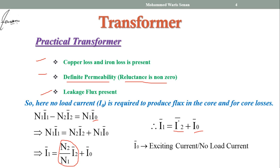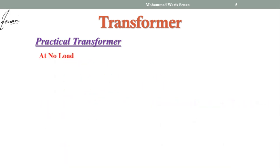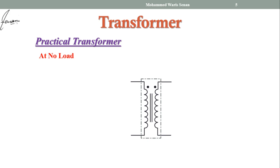Let us draw the equivalent circuit diagram of transformer. We will develop it by adding losses to the ideal transformer, because the ideal transformer has no loss but the practical transformer has copper loss as well as iron loss. So we will add these losses to the ideal transformer to make it a practical transformer.